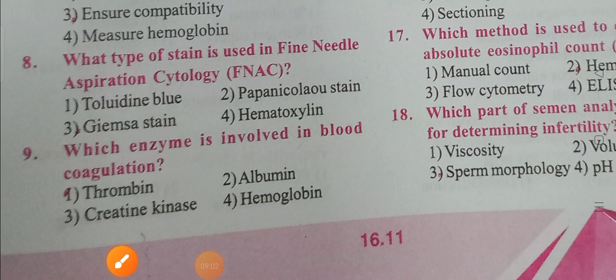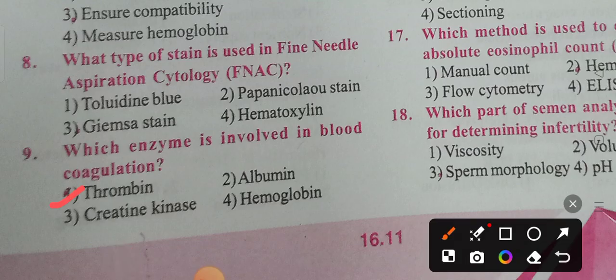Question nine: Which enzyme is involved in blood coagulation? Options: Thrombin, Albumin, Creatinine kinase, Hemoglobin. Option 1 is the correct answer — Thrombin is the enzyme involved in blood coagulation.